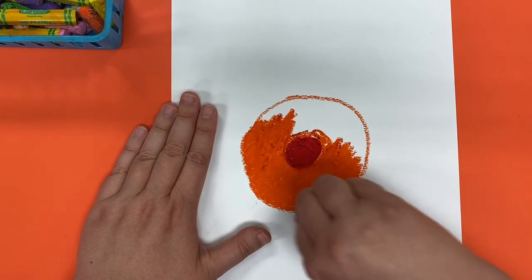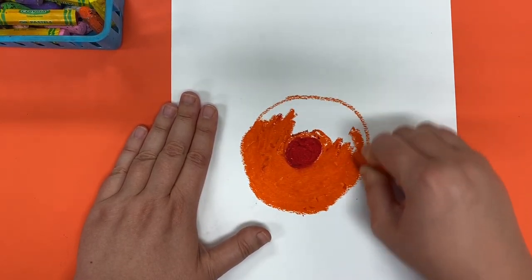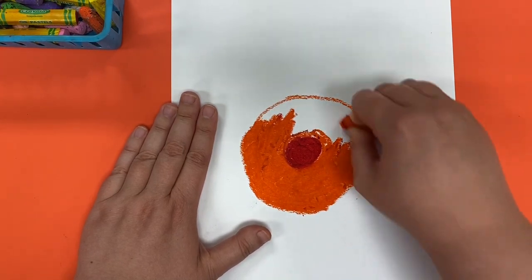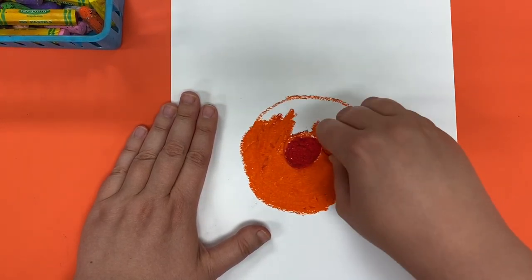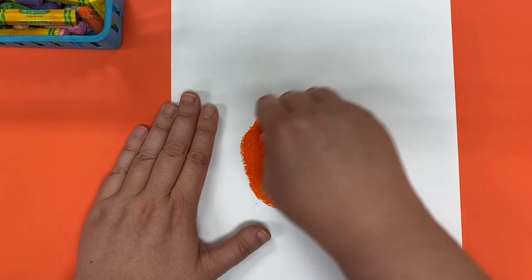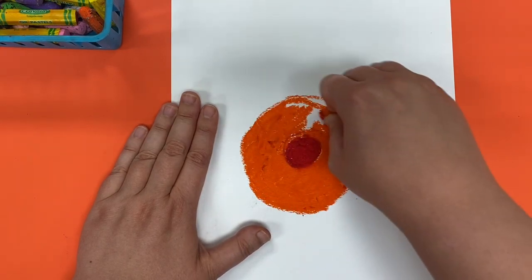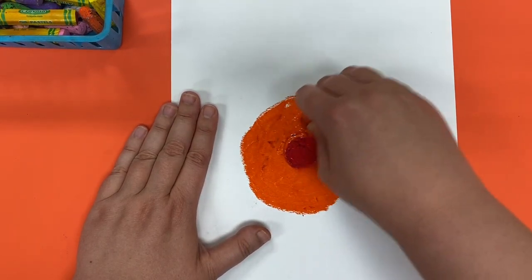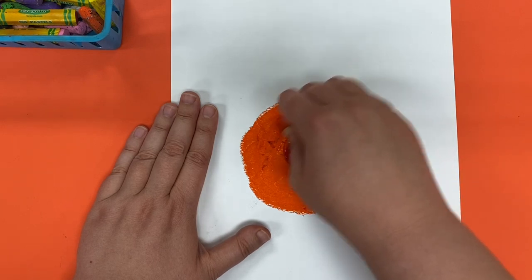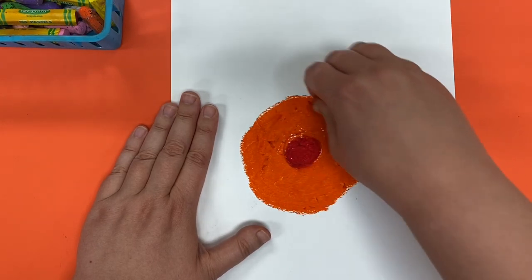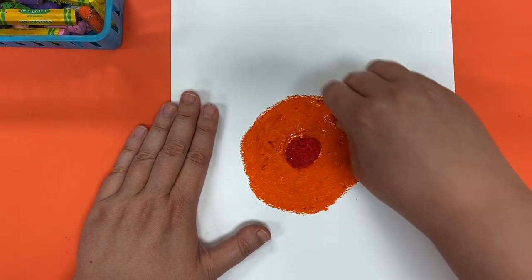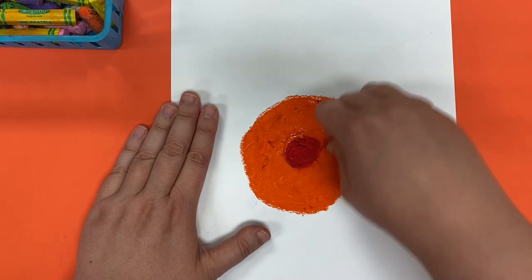You're going to notice as you are working that you will get little oil pastel crumbs that kind of show up on your paper. And what you want to do when you are working is make sure that you kind of dust them off in between colors.